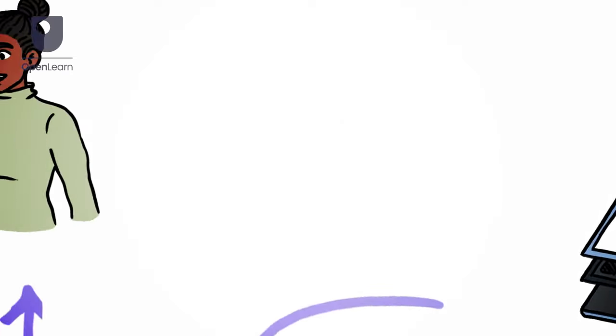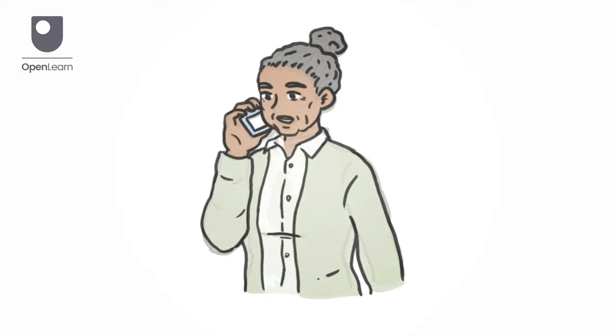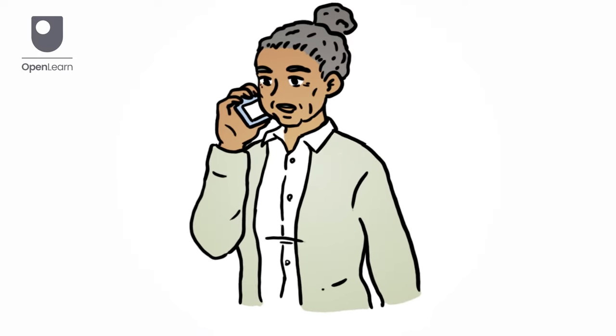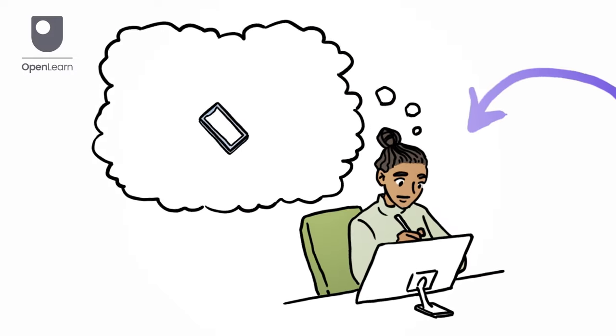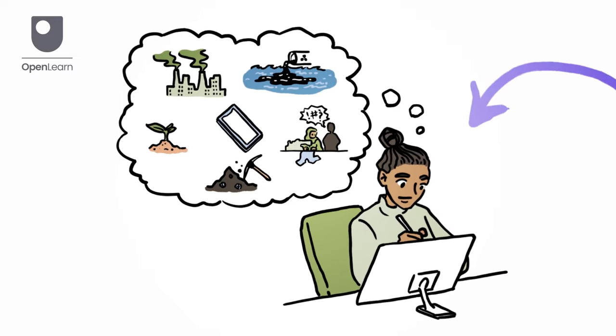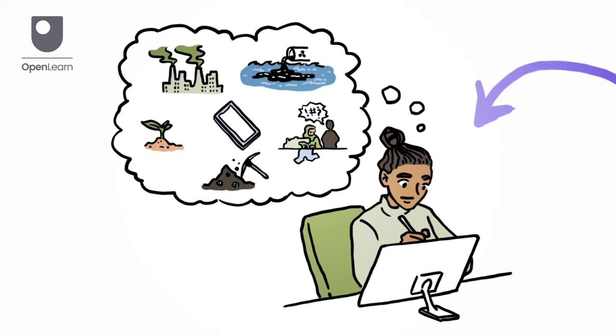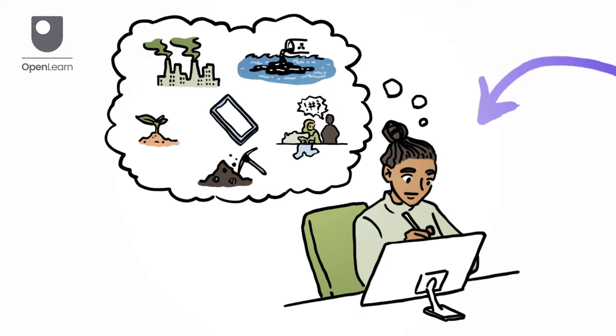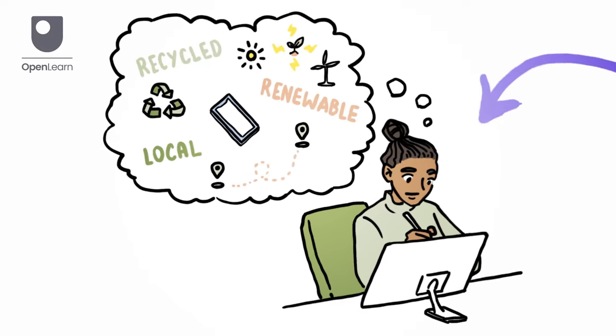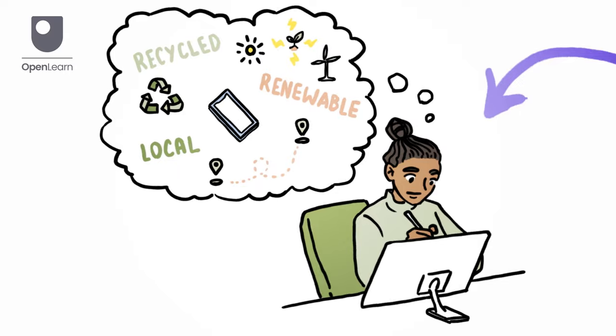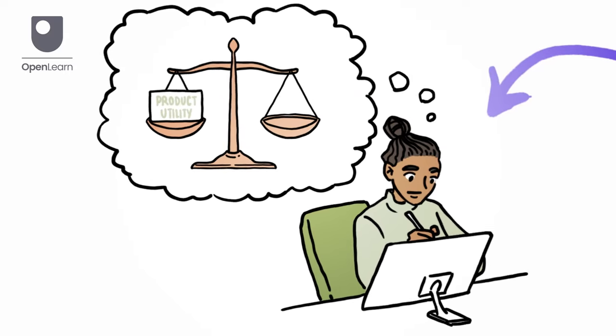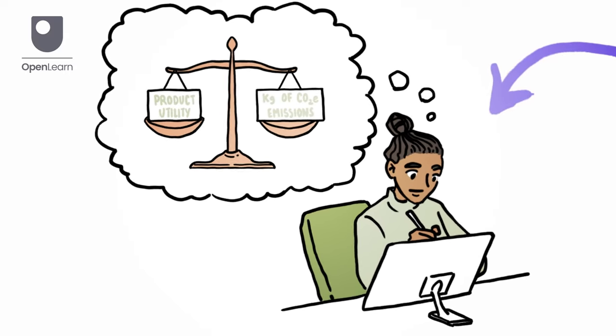If products lasted longer and we shared more, we would need fewer new things overall. We need to design using energy efficient production processes and prioritize materials that are recycled, renewable and local to provide greater product utility for every kilogram of carbon equivalent emissions.